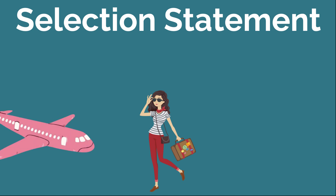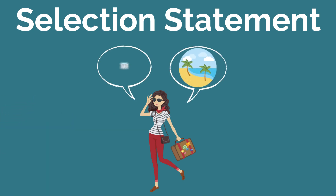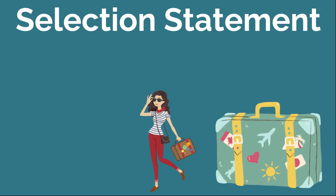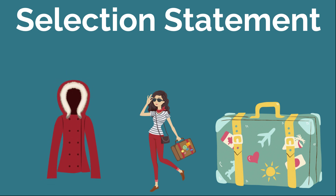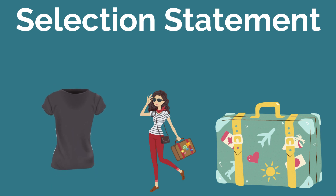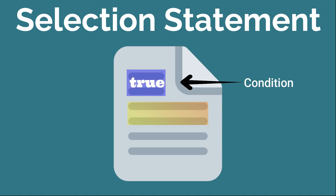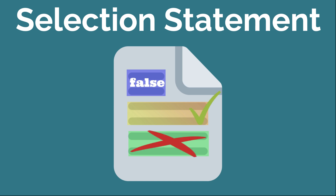The first one is Selection Statement. Before getting into the types, let's understand what a Selection Statement is with an example. Consider Lily is planning her holiday trips but she is confused between two places — Goa and Kashmir. If she decides to go to Kashmir, she will be packing her bag with all her winter clothes. But if she decides to go to Goa, she will be packing all her summer clothes. She has both summer and winter clothes in her wardrobe, but she selects either depending on the place she is going to visit. In the same way, in a Selection Statement, depending on whether the condition is true or false, we execute some block of code and skip the other.